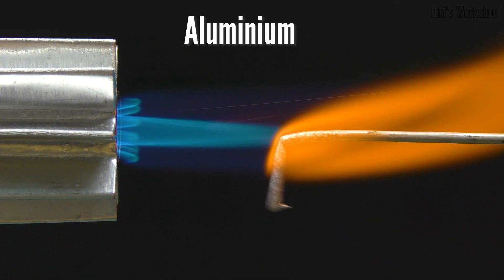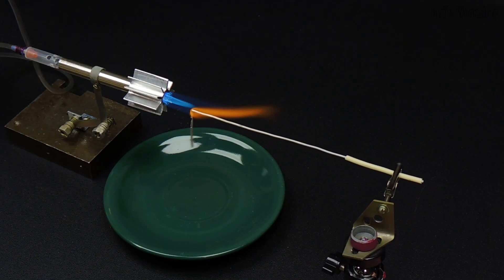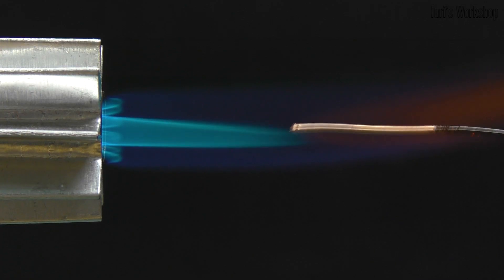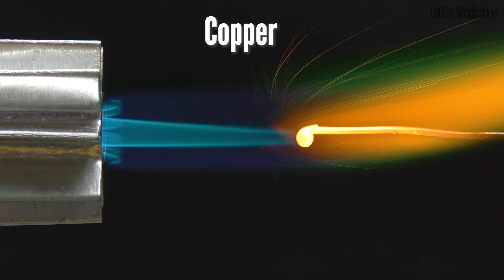As you can see this burner can easily melt aluminum wire. The burner can also cope with copper wire.